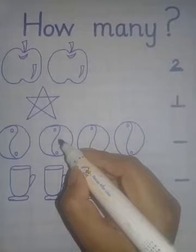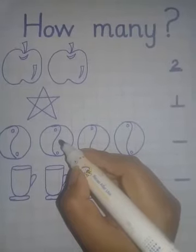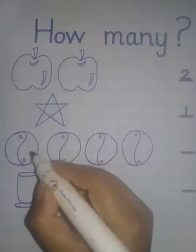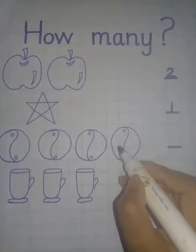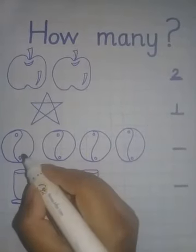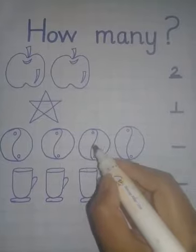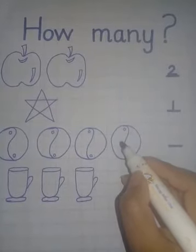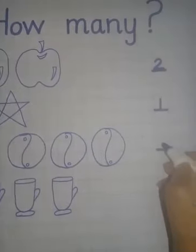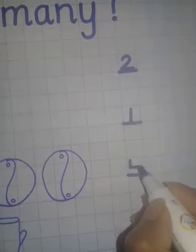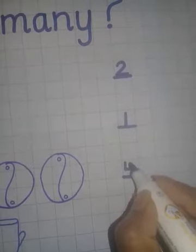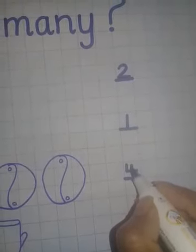So here are the balls. Count the balls with me. One, two, three, four. Again count with me. One, two, three, four. So here I will write four. First make a small one, then turn to the right side and then write one here and stop when you touch the line.